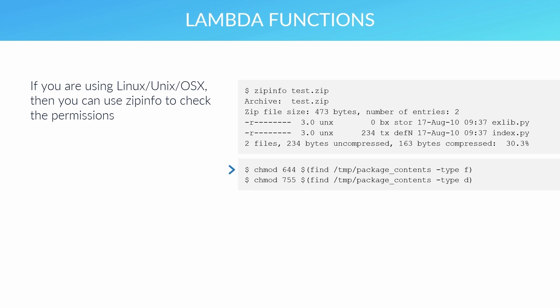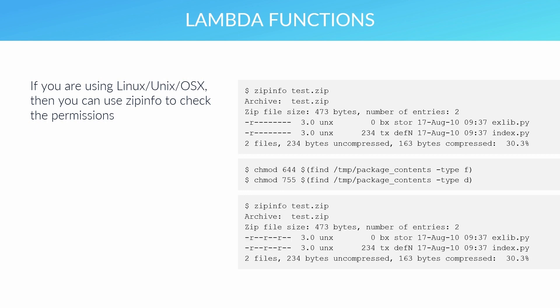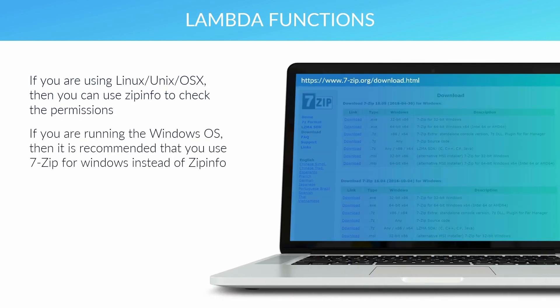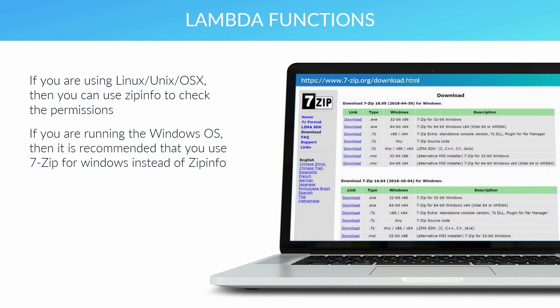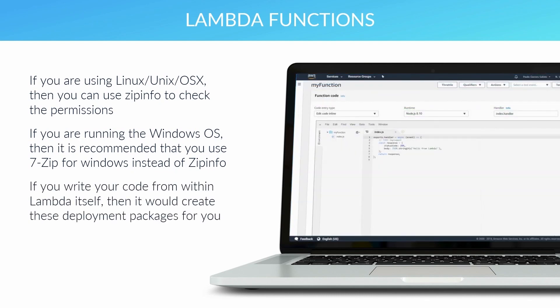To rectify this and set the correct permissions for AWS Lambda, you can run the appropriate commands. The first command will ensure that files have read-write permissions to the owner, in addition to read permissions to group and global. The second command pushes these same permissions down in all other directories. If you are running the Windows OS, it is recommended that you use 7-zip for Windows instead of zip info. If you write your code from within Lambda itself, then Lambda would create these deployment packages for you.